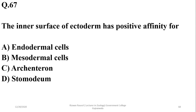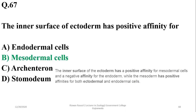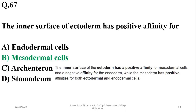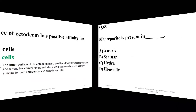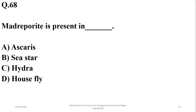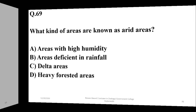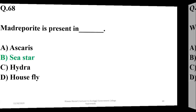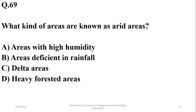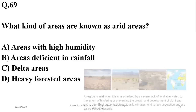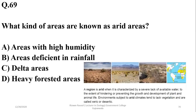Question 67: The inner surface of ectoderm has positive affinity for mesodermal cells and negative affinity for endodermal cells, so B is the right option. Question 68: Madreporite is present in sea stars or starfish. Question 69: Areas deficient in rainfall are known as arid areas — B is the right option.